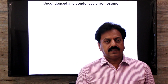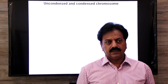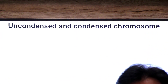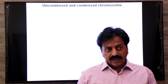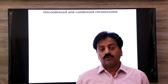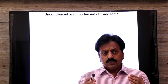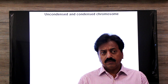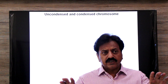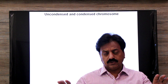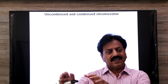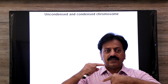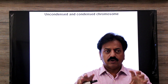Welcome back to our inter-biology classes. Today we will discuss Uncondensed and Condensed Chromosomes. We will discuss the two terms we need to differentiate: condensed and uncondensed chromosomes. When chromosomes are uncondensed, they are called chromatin, and when the DNA is packaged in the nucleus, they are called condensed chromosomes.